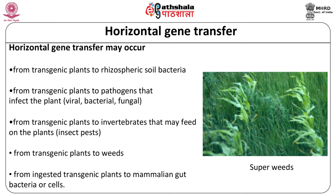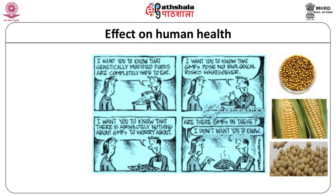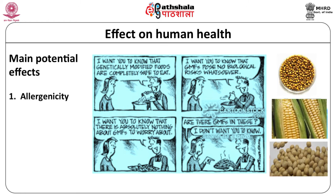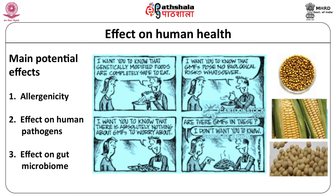Horizontal gene transfer to other organisms like soil bacteria, beneficial insects, or human gut microflora may lead to unpredictable effects on the ecosystem and on human health. Transgenic crops could affect human health in various ways. The new protein expressed by the transgenic has a possibility of being allergenic. The transgenes, especially the antibiotic-resistant genes used as selectable markers, are also thought to lead to development of antibiotic-resistant human pathogens. This concern has been dealt with by the development of marker-free transgenic plants, providing a solution to the possibility that bacteria may develop resistance due to horizontal gene transfer from transgenic plants.